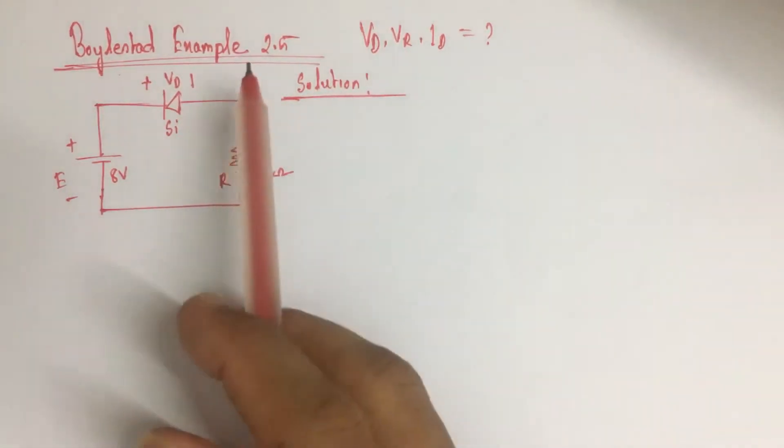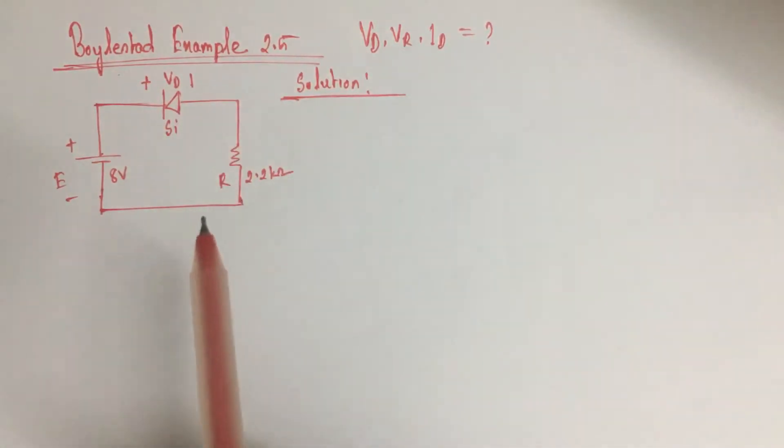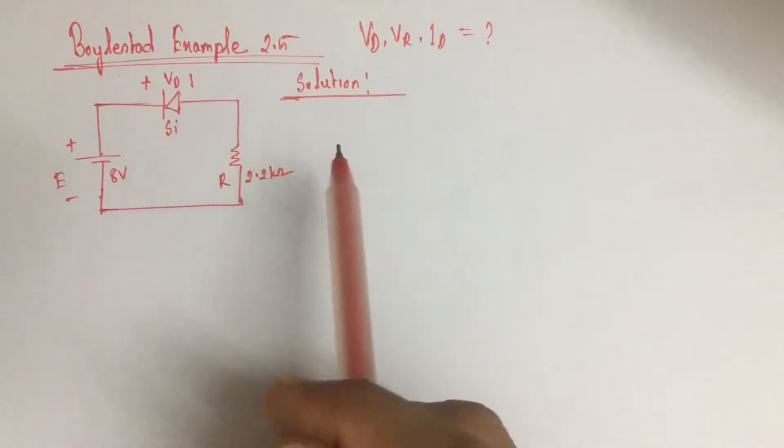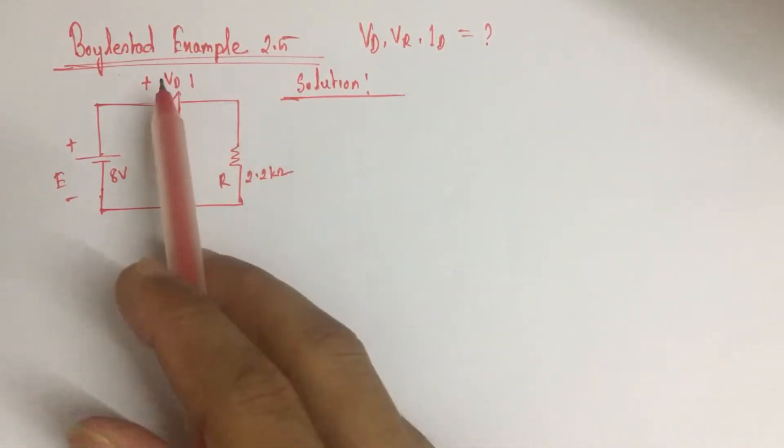Hi viewers, today we will solve example 2.5 from Boyle Street. This is a diode related problem where we have to identify the diode voltage VD which is across the silicon diode